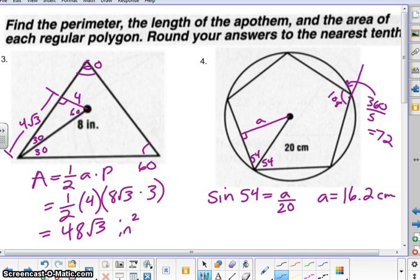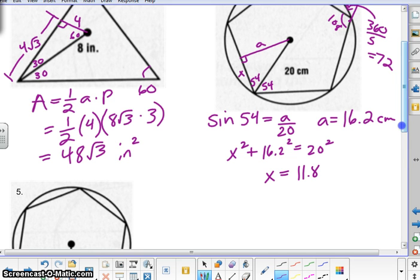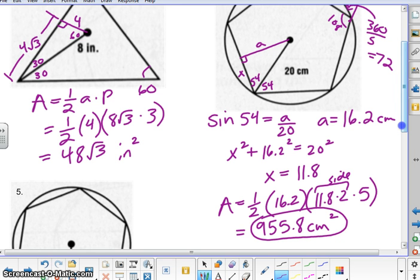So then all we're going to do is do a little Pythagorean theorem. So we have X squared plus 16.2 squared is equal to 20 squared. So then after that, let's go ahead and get the answer of 11.8. And then we can solve for the area. Area equals 1 half apothem, which is the 16.2, and then the perimeter would be 11.8 times 2, or you can just say 11.8 times 10. That's up to you, because this would right here be the side. And then to get the perimeter, there are five different sides. So we'd have to multiply it by five. So go ahead and push pause, see if you can get the same answer as this. So hopefully we are the exact same. And that's how you find the area of that pentagon.